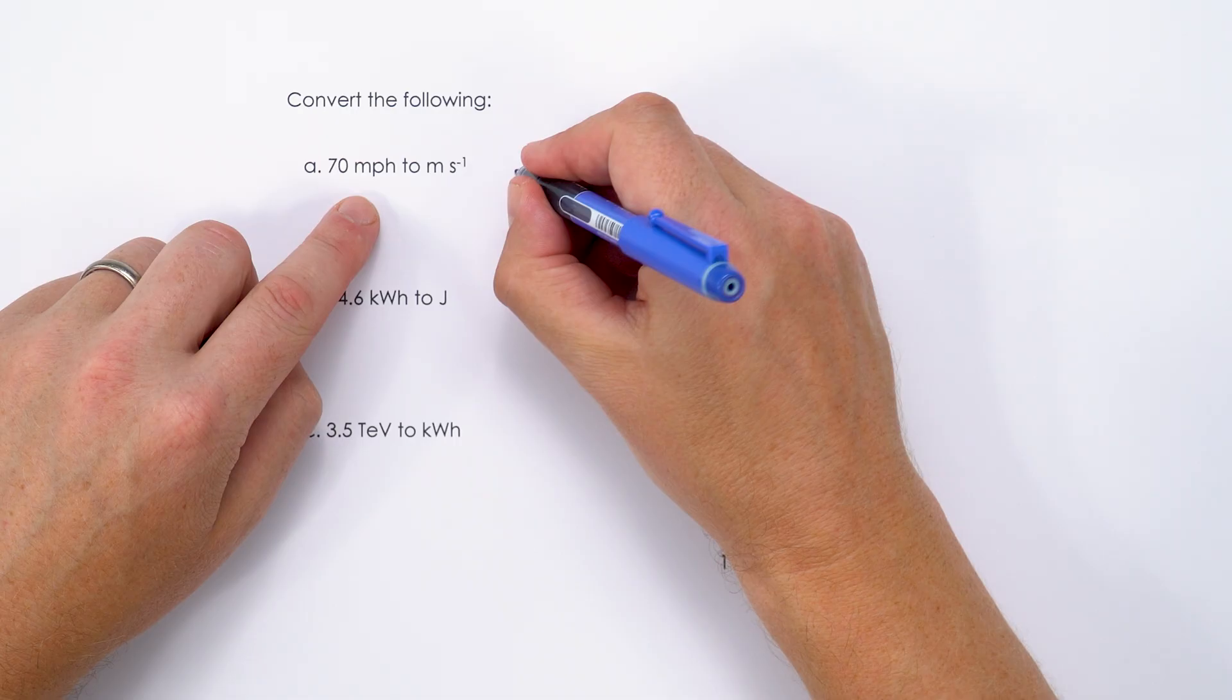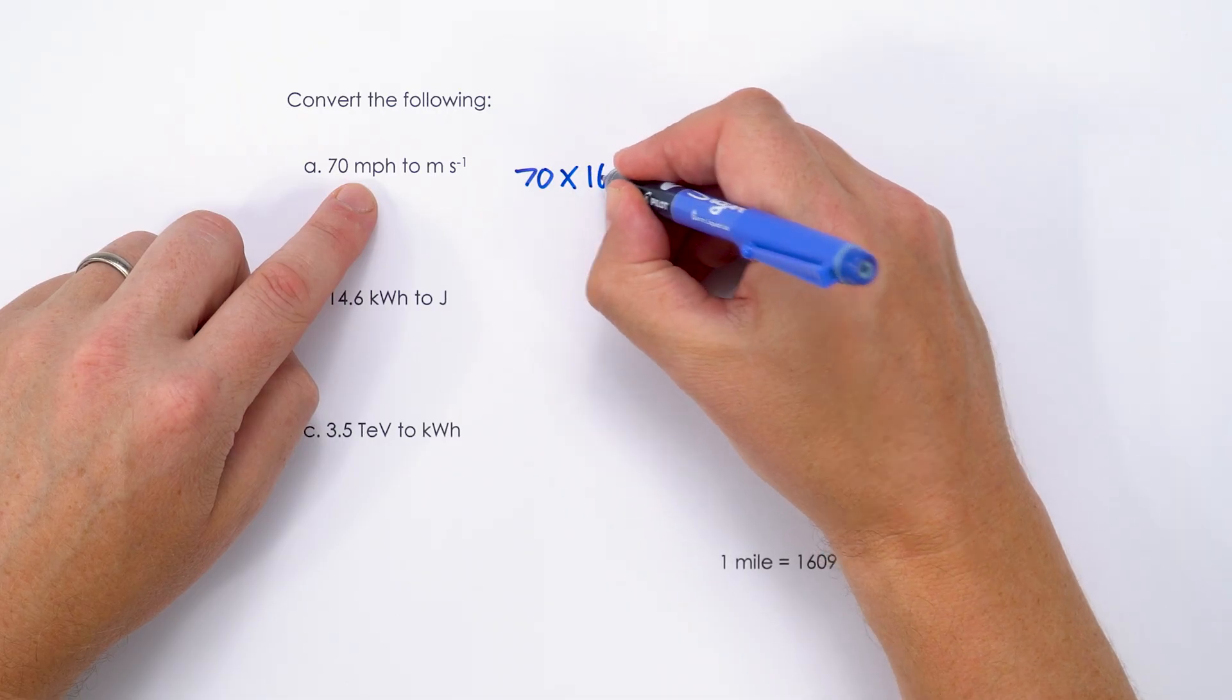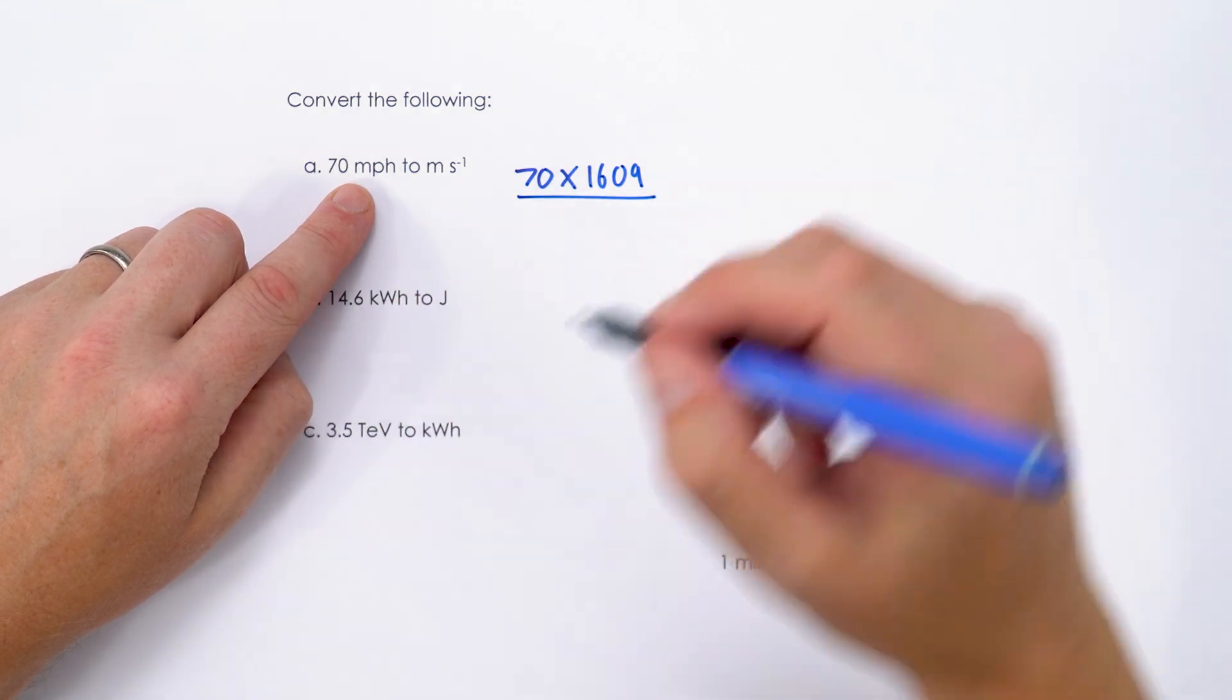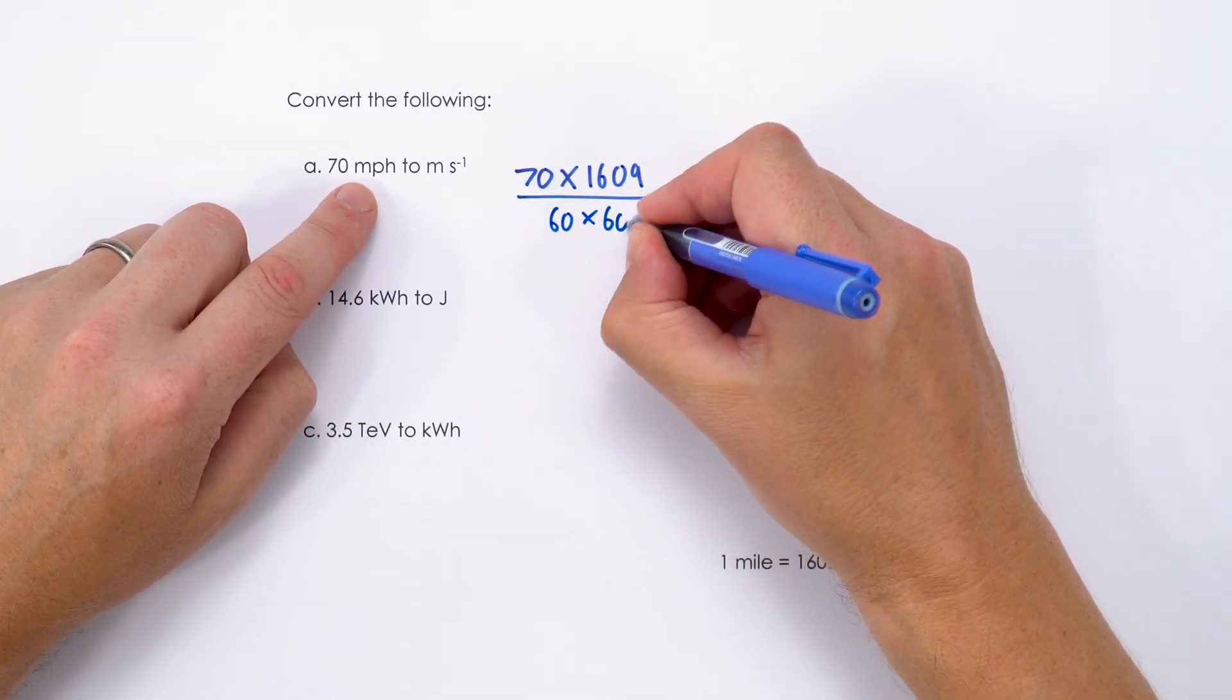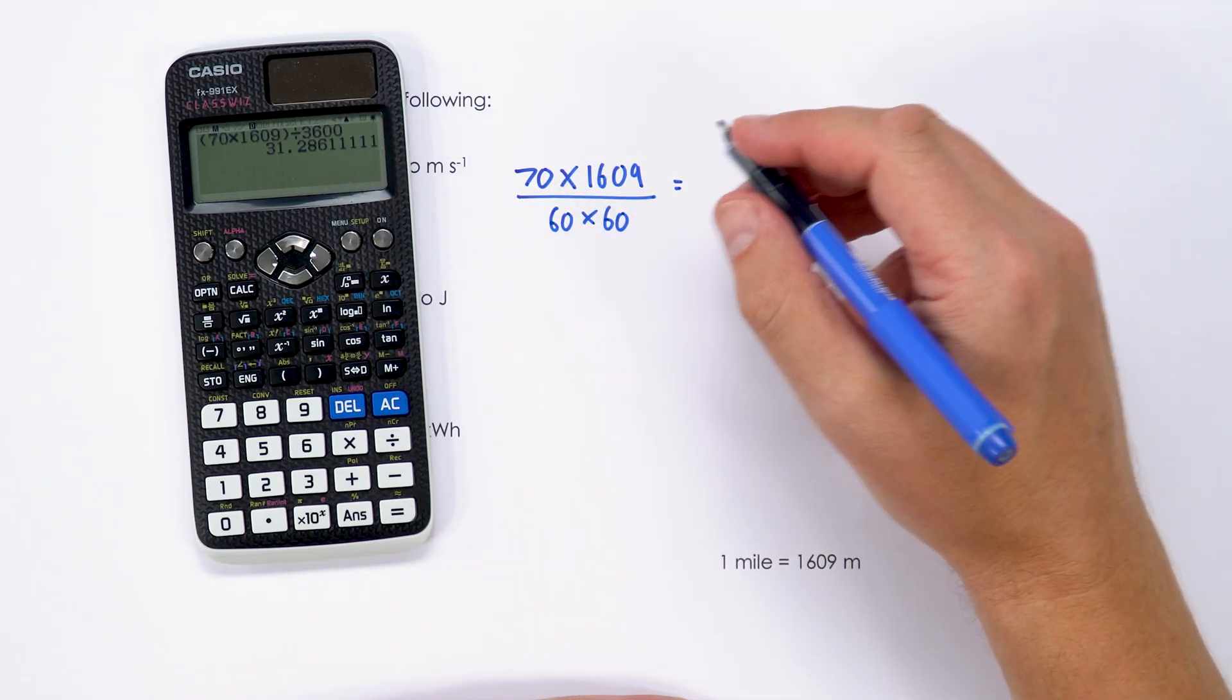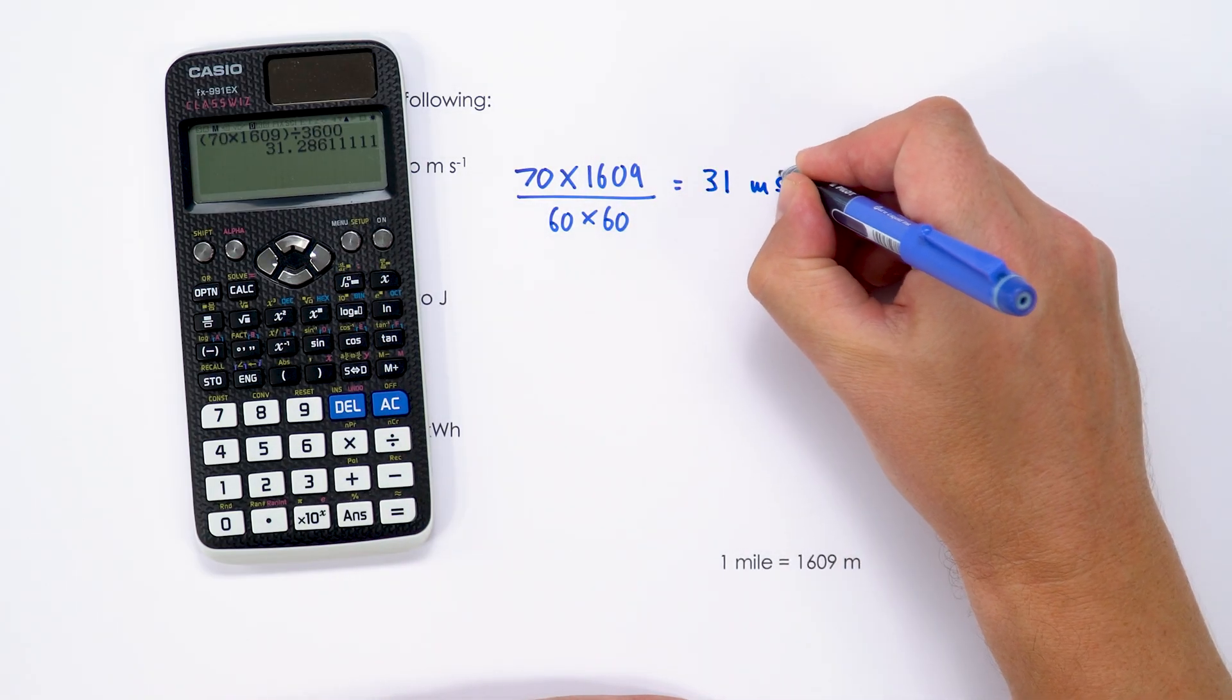So the first thing I'm going to think about is if we have 70 miles per hour, we're going to multiply the miles by 1,609 to get the metres per hour, and then we're going to divide by the number of seconds in one hour, which is 60 multiplied by 60. When we do that we get an answer equal to 31.28, so to two significant figures that's closer to 31, so that's 31 metres per second.